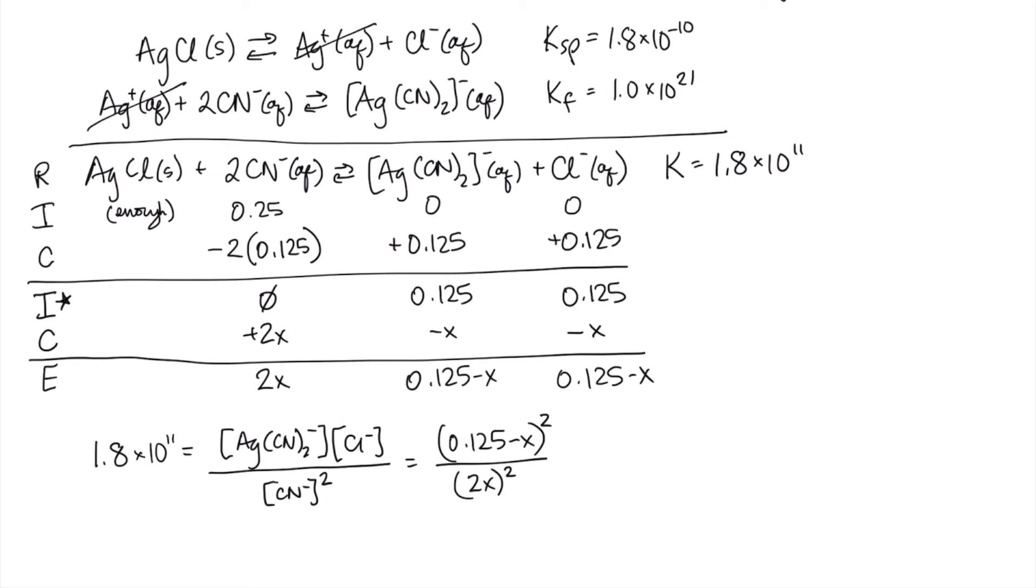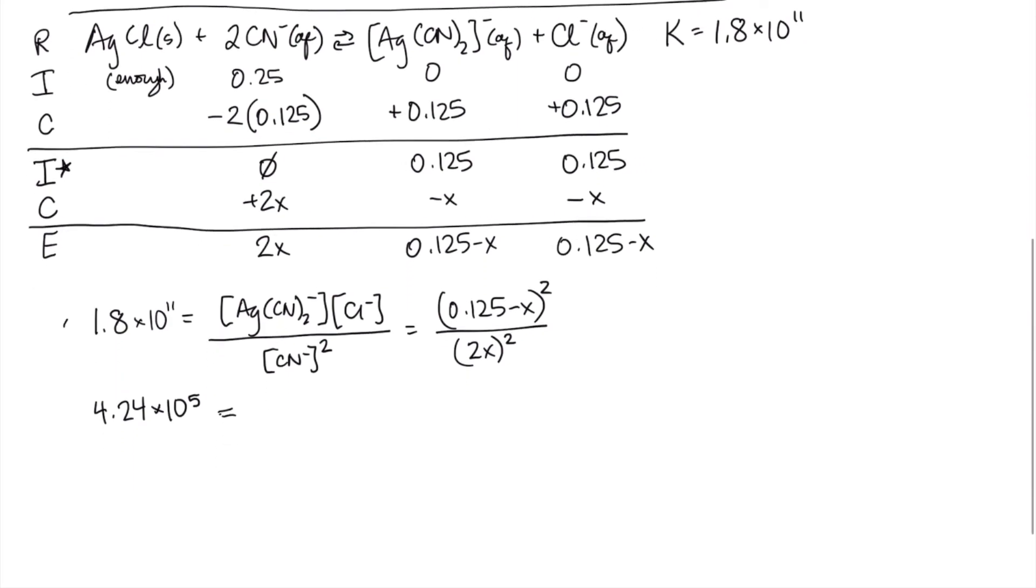So the square root of 1.8 times 10 to the 11th is 4.24 times 10 to the 5th. And so I'm going to just do the square root of this side and the square root of this side. That's going to be 0.125 minus x over 2x. Now, is it possible that I could have neglected x at this point? Probably, but I don't really have to, because I've got the information here that I need to solve this. I just have x's. I don't have any x squared. So I'm going to end up with 8.48 times 10 to the 5th times x equals 0.125 minus x.